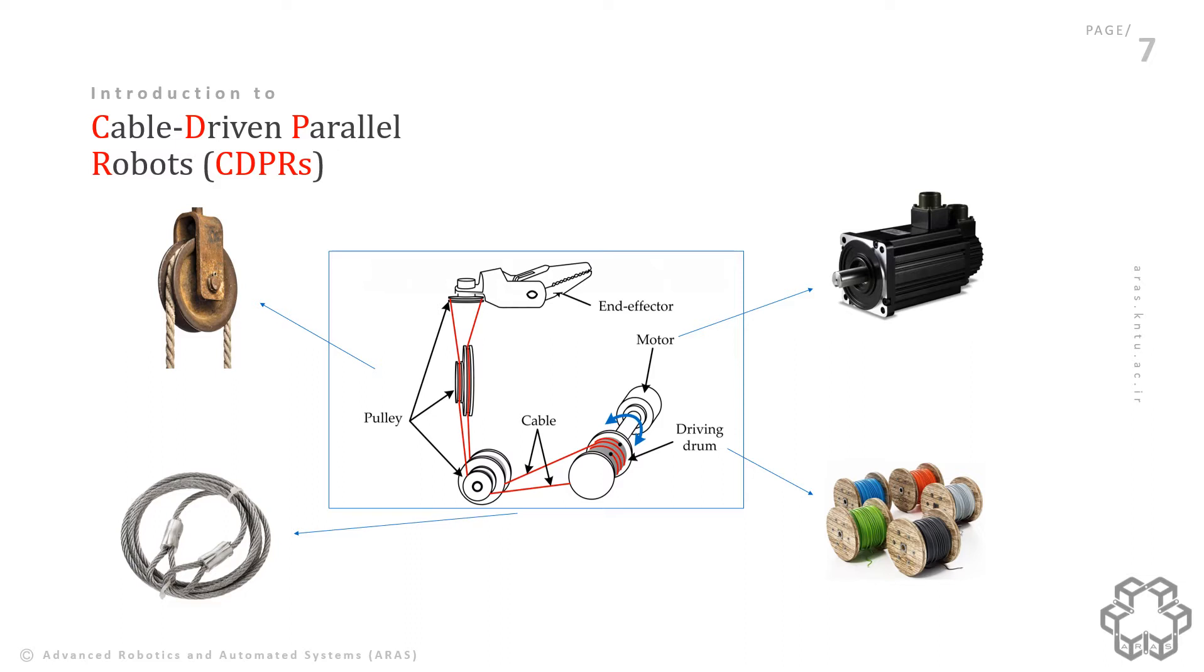AC motor or any other actuator is a component of a machine that can apply torque or force to the robot. In our system, we have used AC motors to produce torques on drums. We can interpret cables as a set of wires which is covered by plastic. In our study, we use stainless steel cables in our robots.